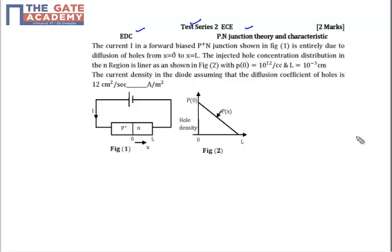The question states that the current I in a forward biased P+ junction shown in figure 1 is entirely due to diffusion of holes from x=0 to x=L. So this is the diffusion hole current.